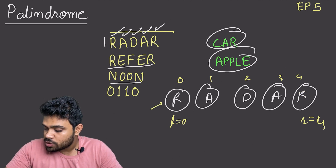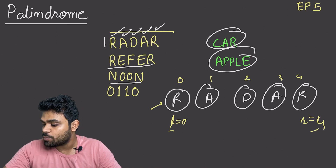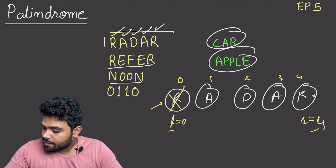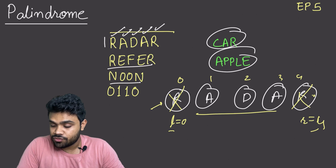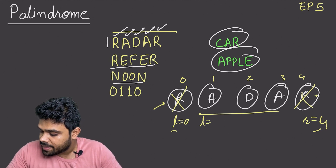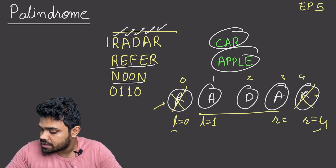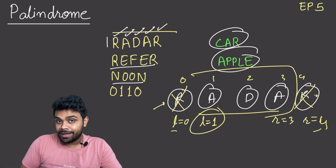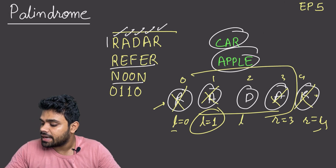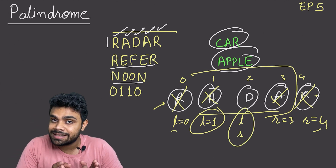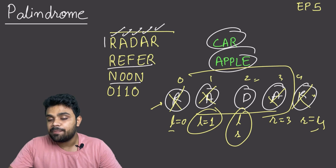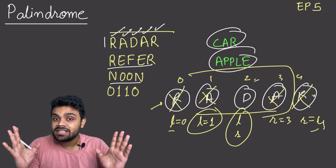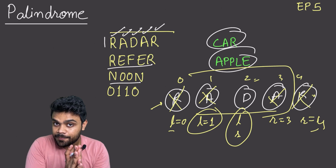The leftmost pointer is pointing to R and the rightmost pointer is also pointing to R, so they are equal. We then evaluate the remaining string by incrementing L and decrementing R — L moves to index one, R moves to index three. L is pointing to A, R is pointing to A — they are equal. We increment L and decrement R again. Now both L and R point to the same character D, so it is a palindrome.